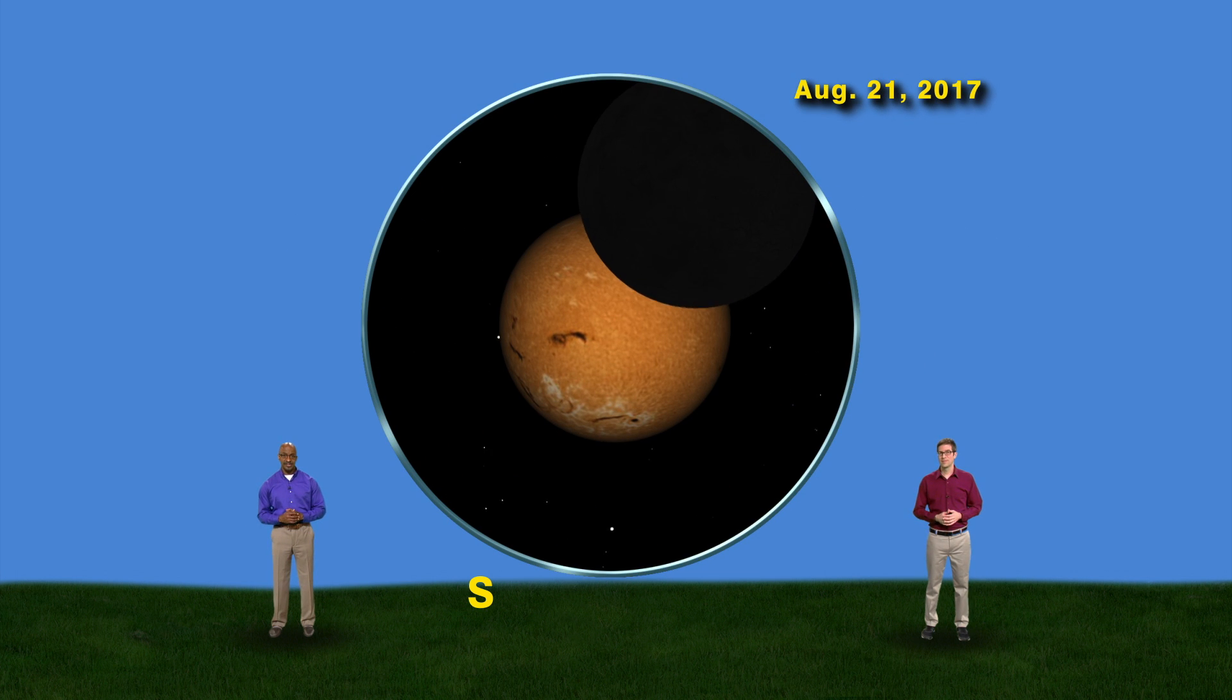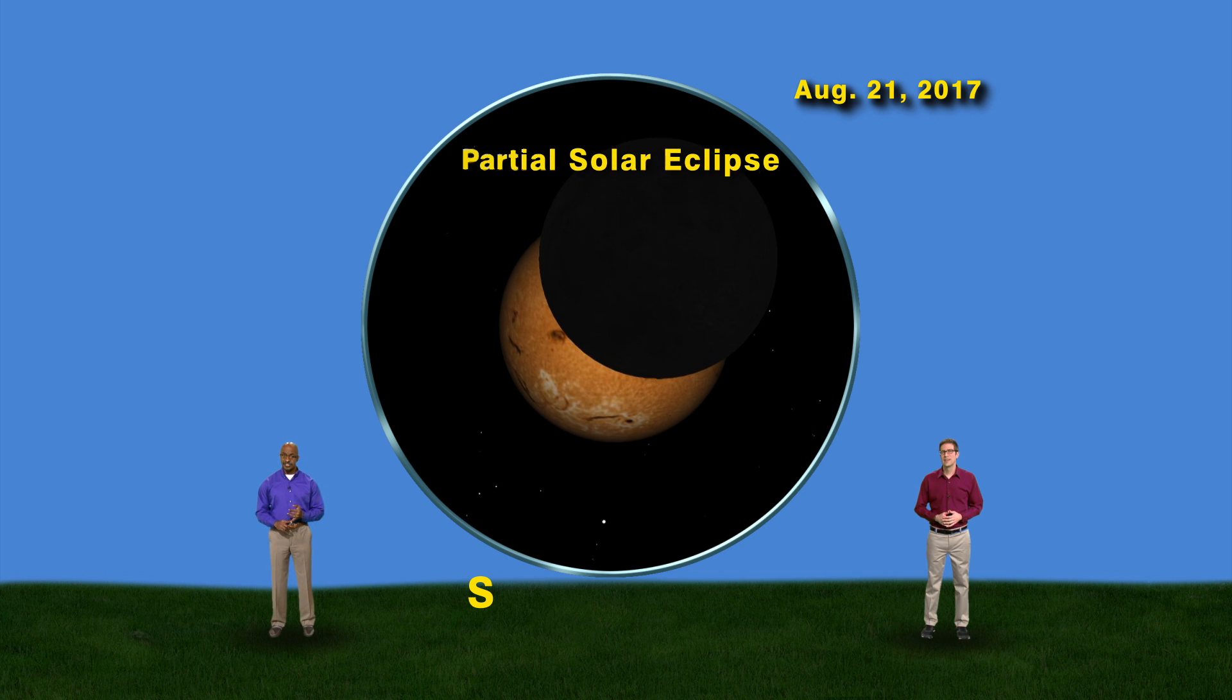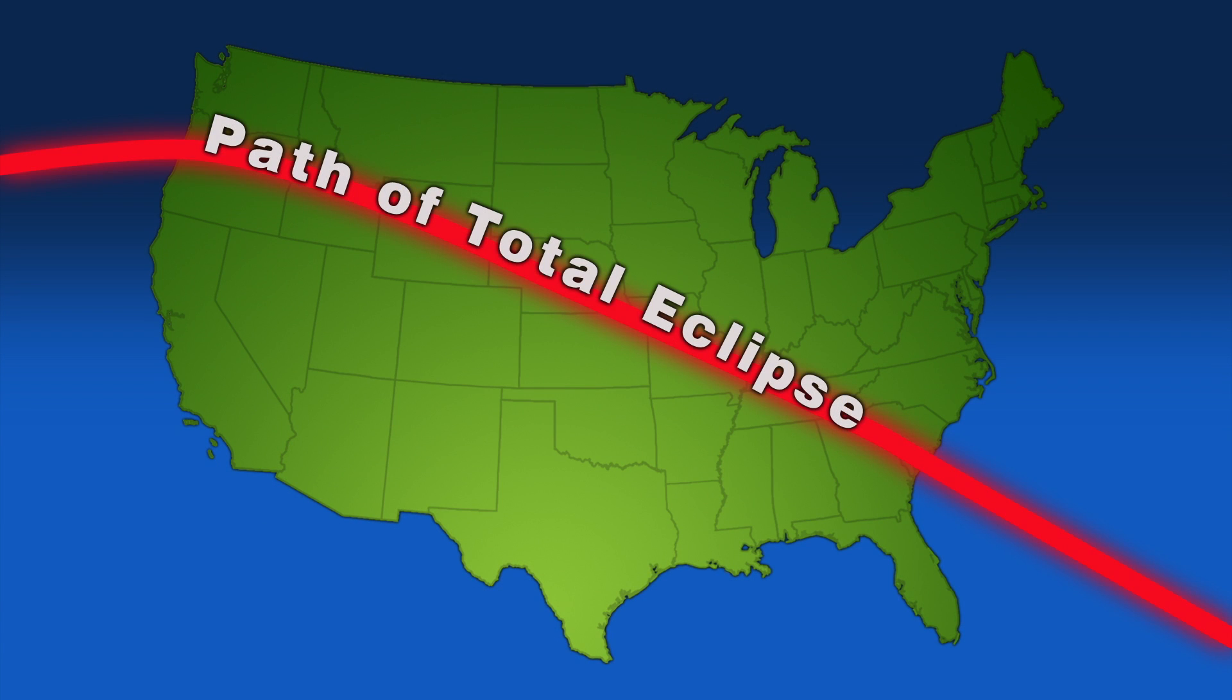This will be what happens on August 21st if you're viewing from most places in the country: a partial eclipse. But to see the total solar eclipse, you'll have to be on a specific 75-mile-wide path.